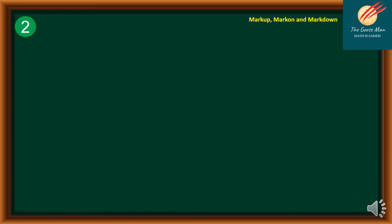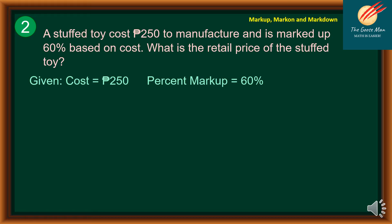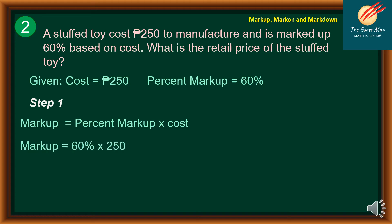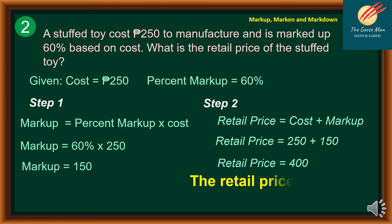Problem number two: A toy costs 250 pesos to manufacture and is marked up 60% based on cost. What is the retail price? Given: cost = 250 pesos, percent markup = 60%. Step one: markup = percent markup times cost = 60% times 250 = 150 pesos. Step two: retail price = cost plus markup = 250 plus 150 = 400 pesos. Therefore, the retail price is 400 pesos.